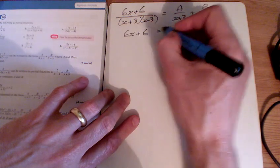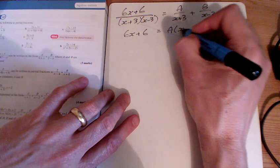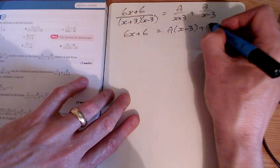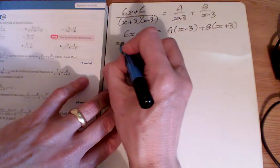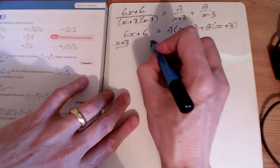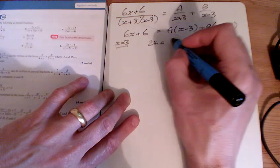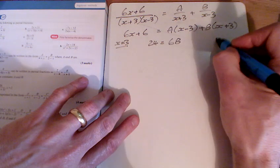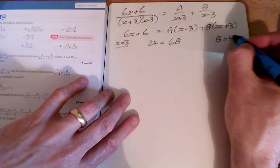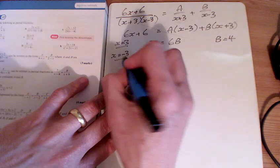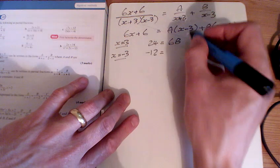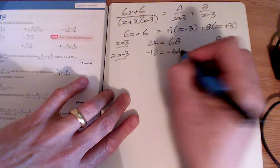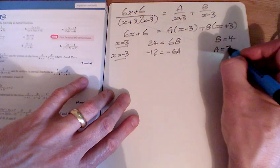So 6x plus 6 is equal to A lots of x minus 3 plus B lots of x plus 3. Putting in x equals 3 gives us 24 over here, and it gives us 6 B's. And so B is equal to 4. Putting in a minus 3 makes minus 12 there, doesn't it? Minus 6 A is there, and so A is equal to 2.